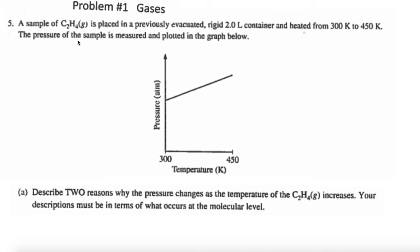Problem one for gas laws. A sample of C2H4 is placed in a previously evacuated rigid 2-liter container and heated from 300 to 450 K. If you don't remember, 273 is 0 degrees Celsius, so you add 273 to degrees Celsius to get your Kelvin. This is pretty close to room temperature, about 27 degrees. The pressure of the sample is measured and plotted in the graph below. Here's temperature and here's pressure in atmospheres. They're using Kelvin because almost always when we use gas laws, we use Kelvin temperature. It says describe two reasons why the pressure changes as the temperature increases. Your description must be in terms of what occurs at the molecular level.